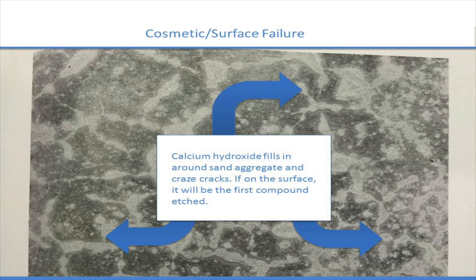In this picture, you see an older plaster job that has been underwater for quite a long time. Where the calcium hydroxide is at the surface — which it naturally is — the aggressive water is dissolving the calcium where it comes into contact with the water. It's filling in naturally around the little craze cracks and fissures, around the aggregates, and it's slowly being leached out. This is the natural appearance. This is a cosmetic failure — people see this in a plaster job and they're not happy about it.